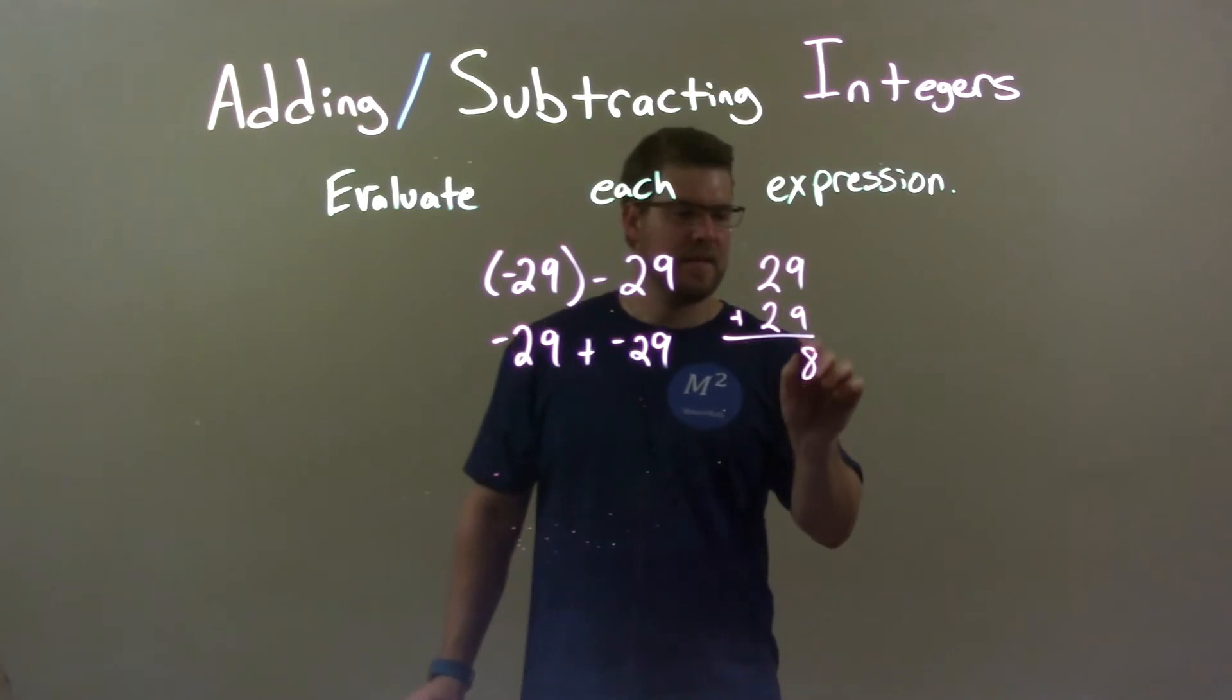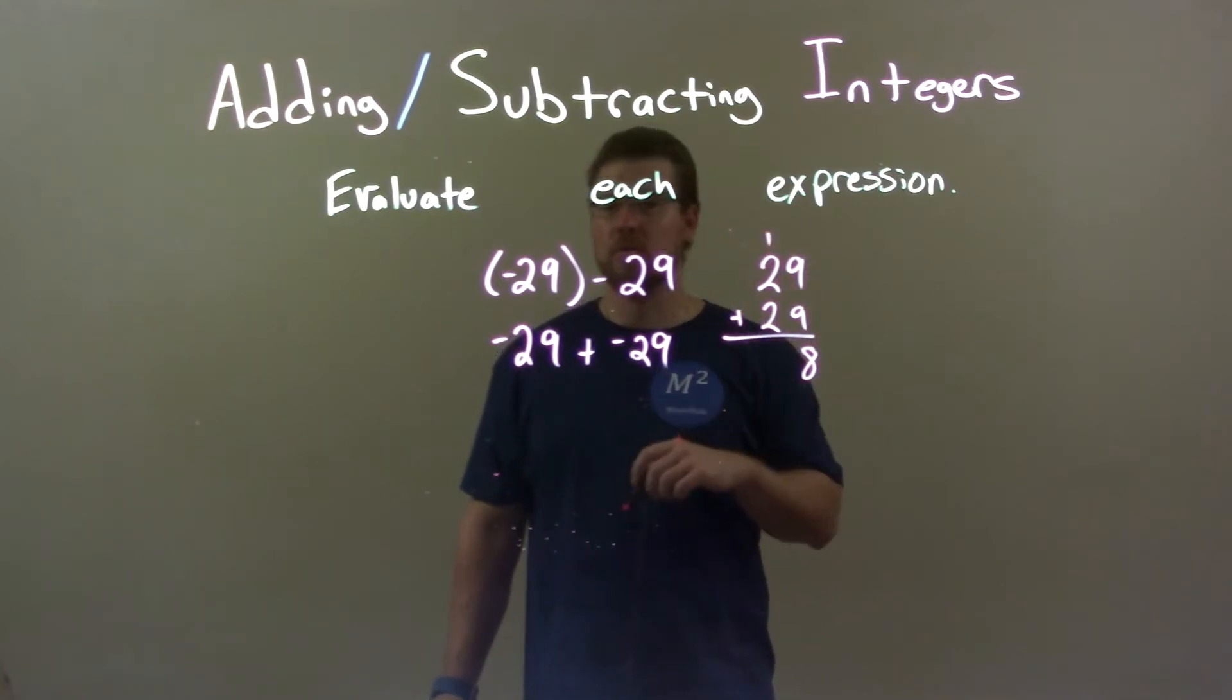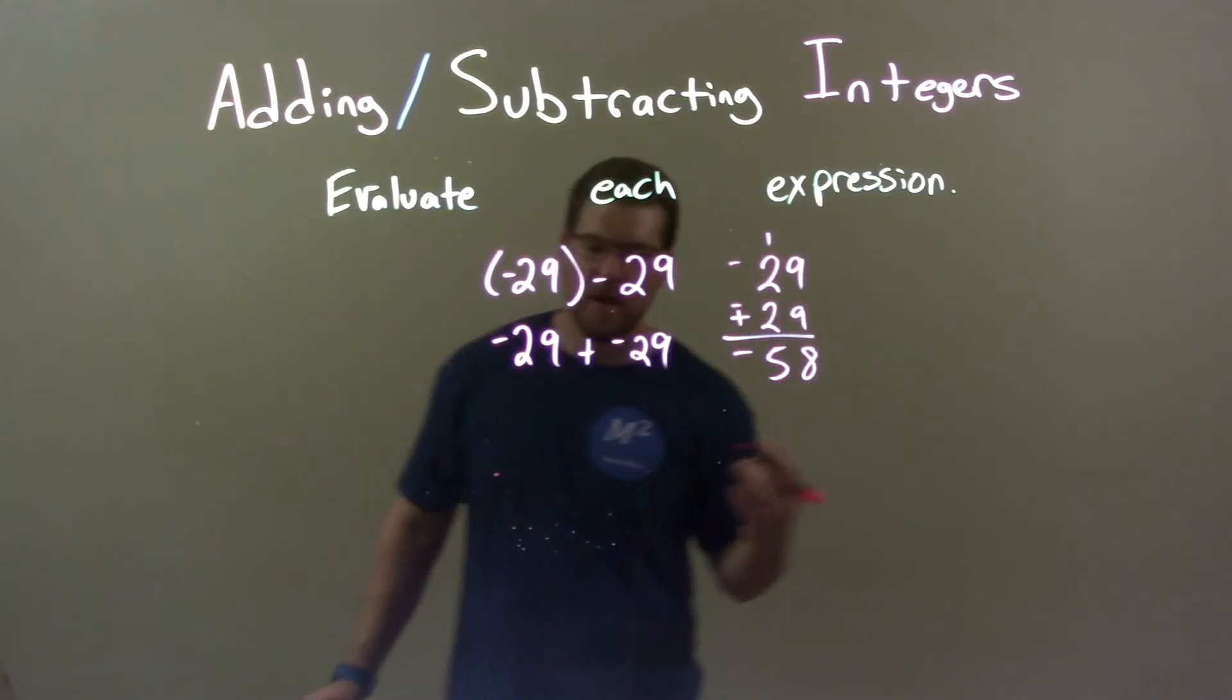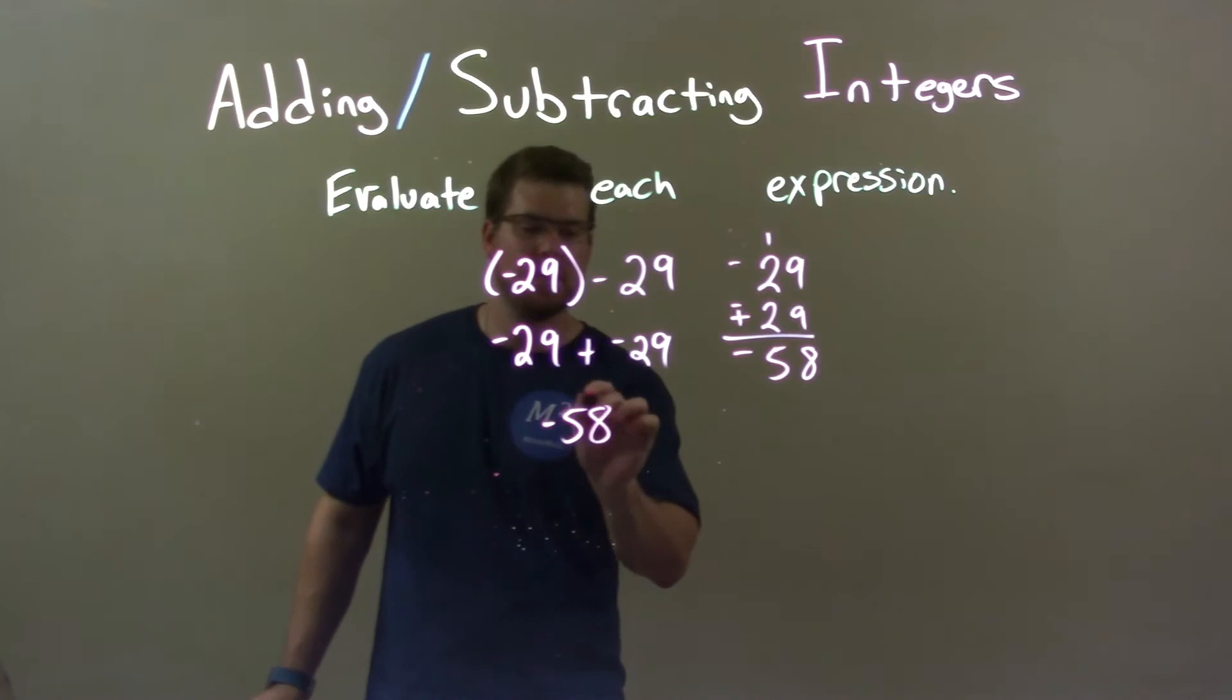9 plus 9 is 18, carry the 1. 2 plus 2 is 4, plus 1 is 5. Negatives all the way through, and so our answer here is just negative 58.